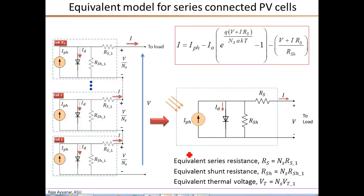The model for the complete series connected module is shown here. The IPH is same as the photon current of a single PV cell. The diode characteristics is similar with two key differences. First is that the voltage across the diode is larger by a factor of NS. So instead of about 0.6 volts open circuit voltage, it is NS times the 0.6. And also the thermal voltage, which is this AKT divided by Q, that also needs to be scaled by the factor NS. So the equivalent thermal voltage VT is NS times the thermal voltage of a single PV cell.